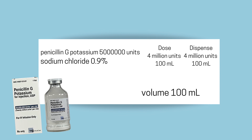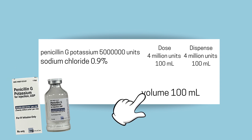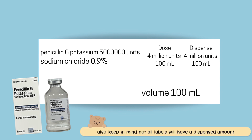Our first IV we're going to be calculating is Penicillin G with Potassium, 5 million units. I wanted to keep this label very simple because every hospital label is different, but every hospital has the drug, the dose, the dispense, what bag it goes in, and the volume. So our drug is Penicillin G with Potassium 5 million units, the dose is 4 million units, dispense 4 million units, and it goes in a sodium chloride 100 ml bag.